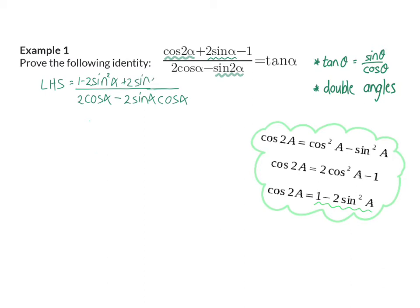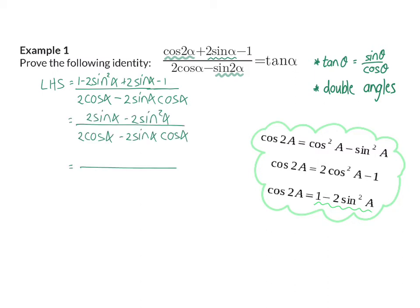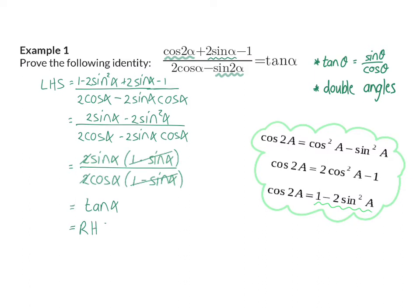I also have the rest of my numerator. Now I can simplify the numerator because 1 minus 1 is 0. Both the numerator and denominator now have two terms, so I need to factorize to simplify further. In my numerator, the two terms have a common factor of 2 sin α, leaving 1 minus sin² α. In my denominator, the two terms have a common factor of 2 cos α, also leaving 1 minus sin² α. Now I can simplify by dividing: 1 minus sin² α divided by itself is 1, and 2 divided by 2 is 1. This leaves sin α over cos α, which by identity is tan α — my right-hand side. The identity is proven.